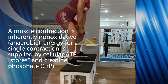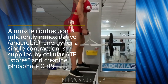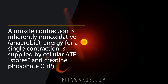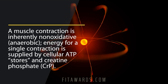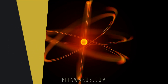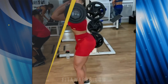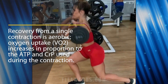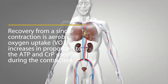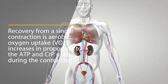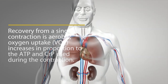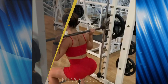A muscle contraction is inherently non-oxidative and anaerobic. Energy for a single contraction is supplied by cellular ATP stores and creatine phosphate (CRP). Recovery from a single contraction is aerobic — oxygen uptake (VO2) increases in proportion to the ATP and CRP used during the contraction.